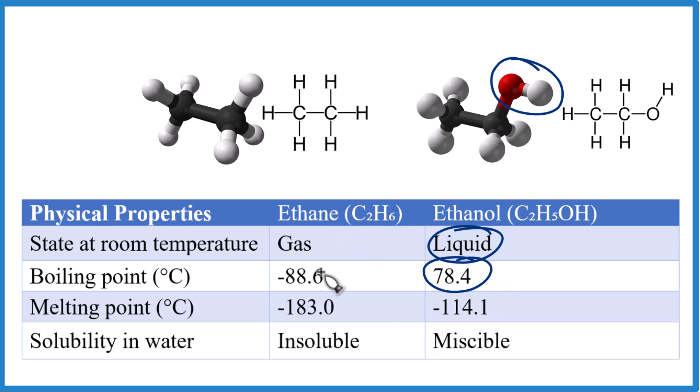Ethane is a gas that boils at a very low temperature because it's not attracted to other molecules. Ethanol, because of this polar group, is a polar molecule that's attracted to other molecules.